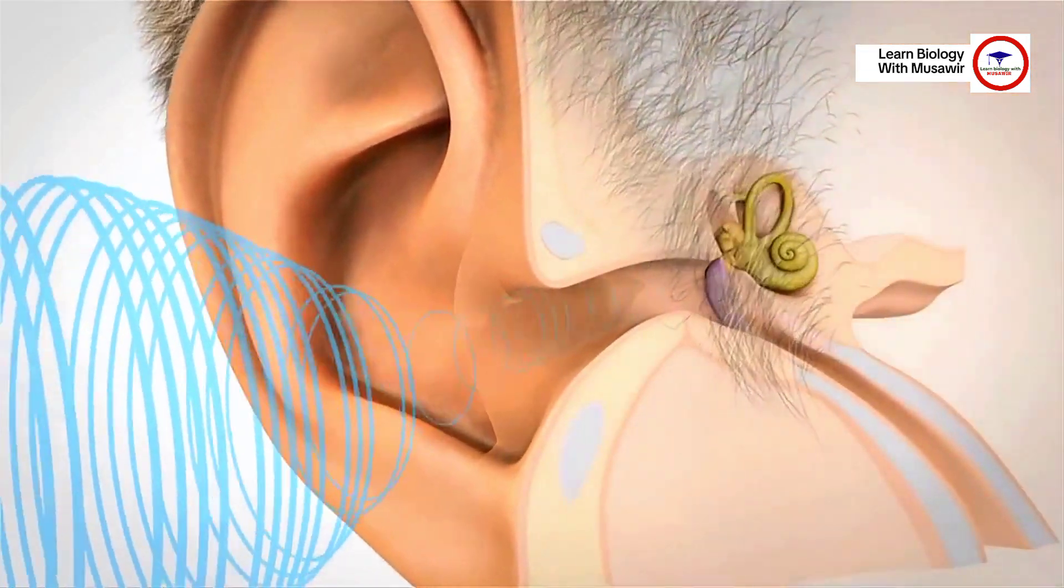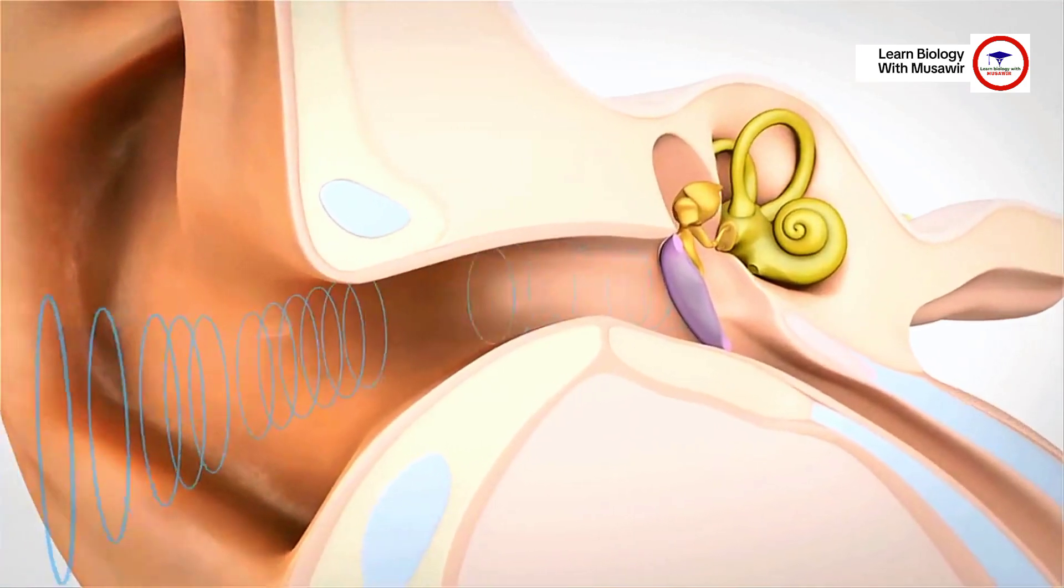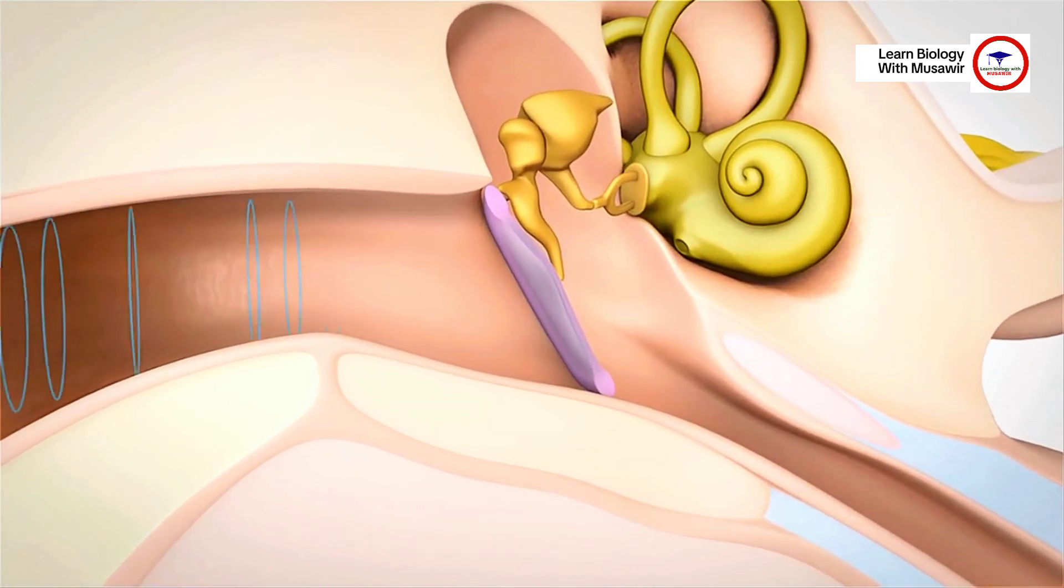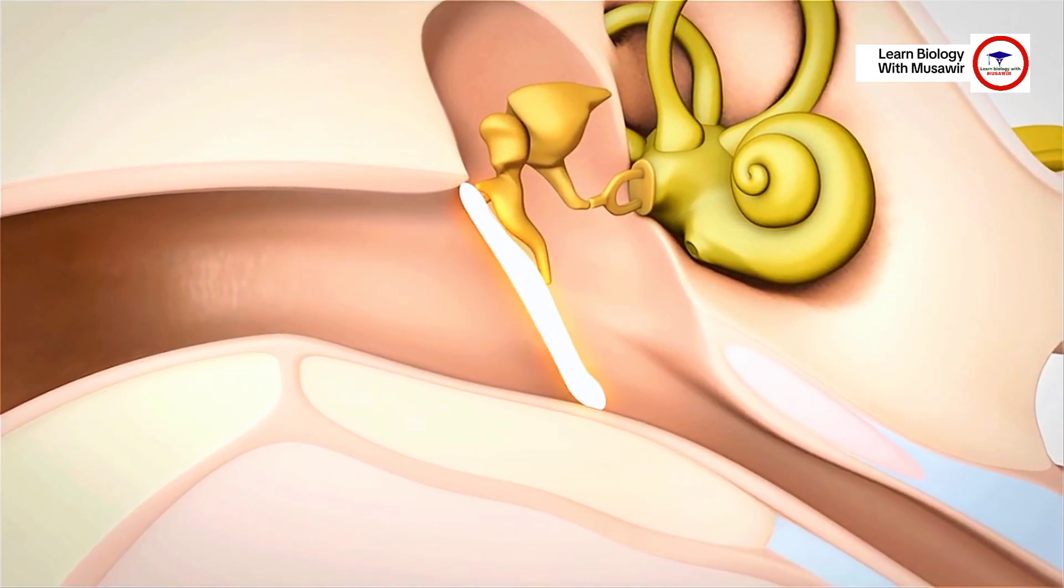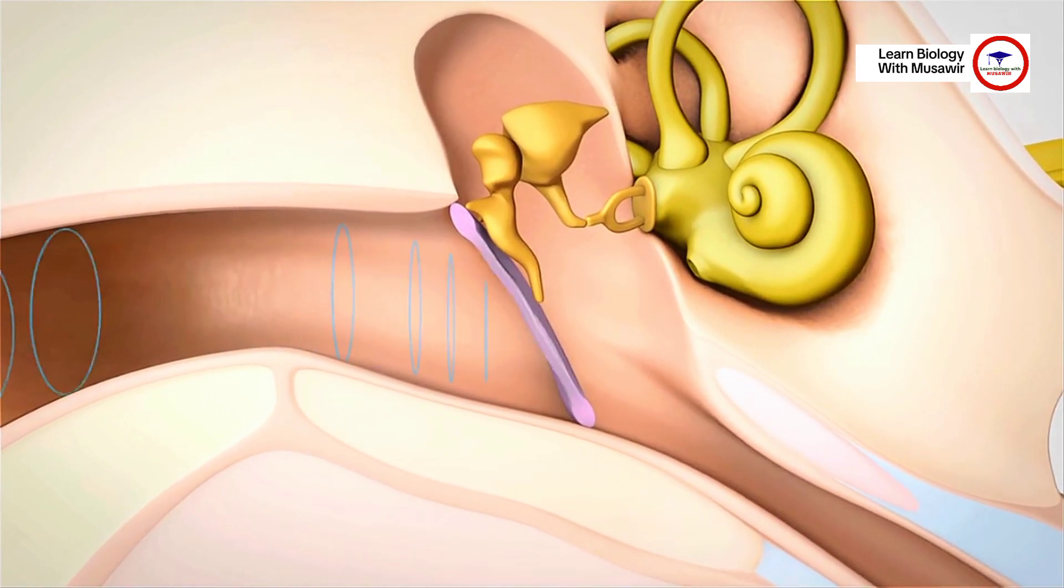Sound enters the ear and is directed through the ear canal where it first reaches the eardrum. As the eardrum begins to vibrate, it sets the ossicular chain in motion.